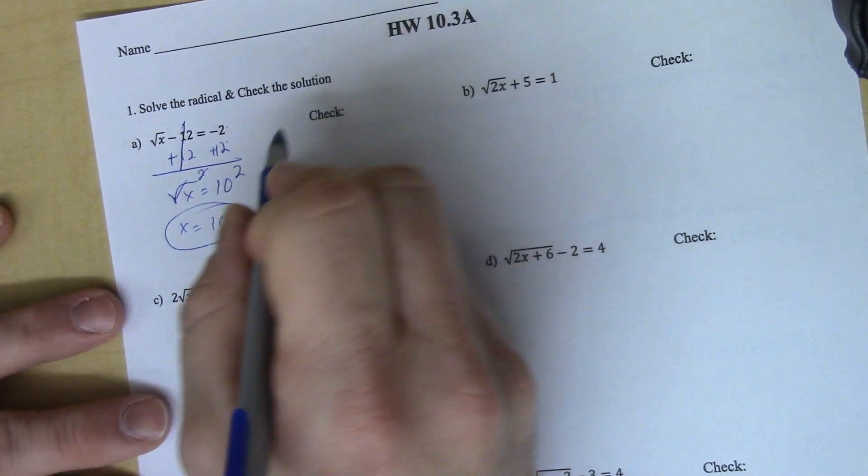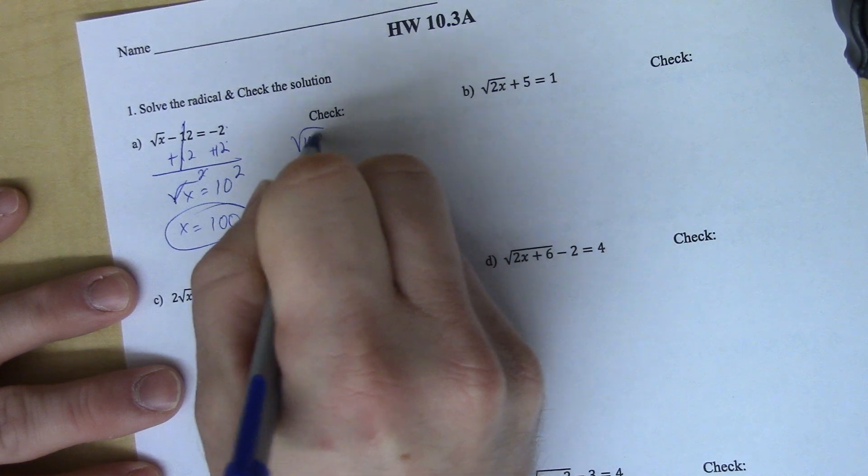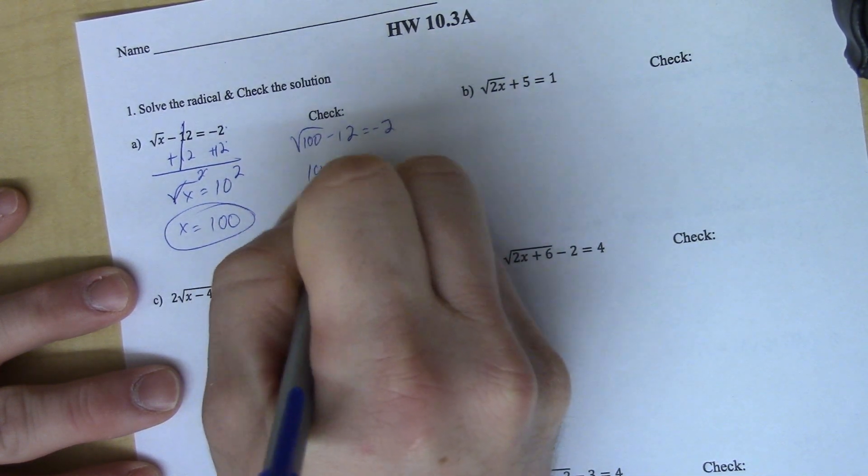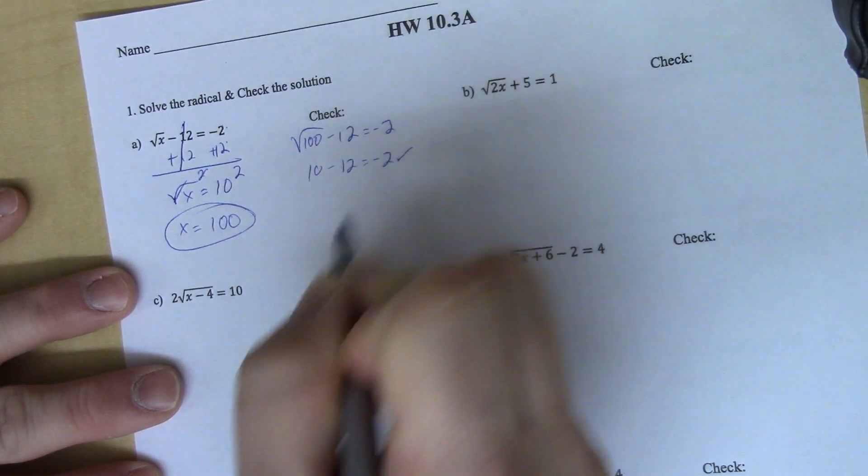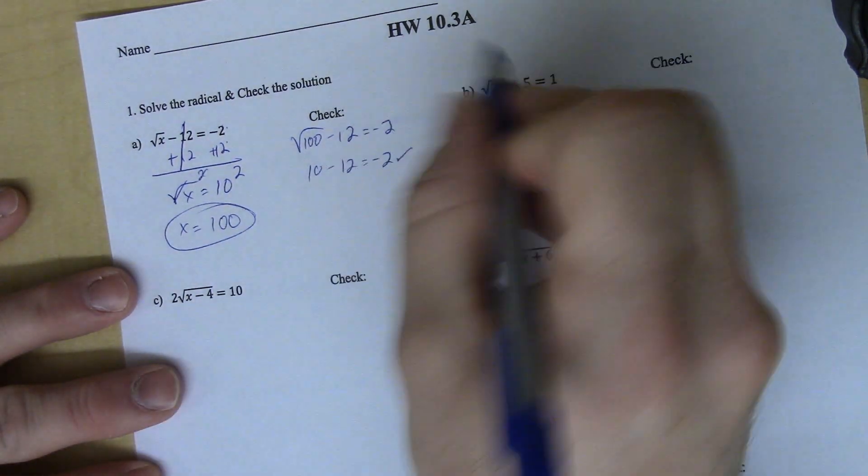Then it wants you to check. So I go through and the square root of 100 minus 12 equals negative 2. 10 minus 12 equals negative 2. It sure does, so it works, so I can keep it.